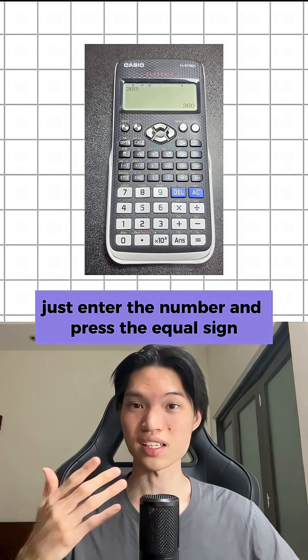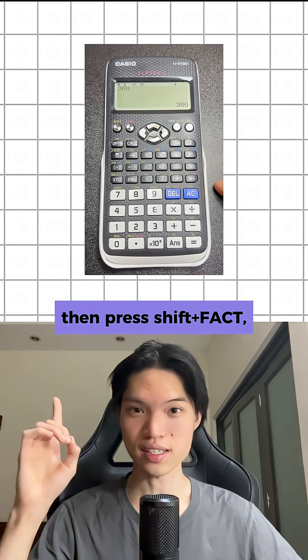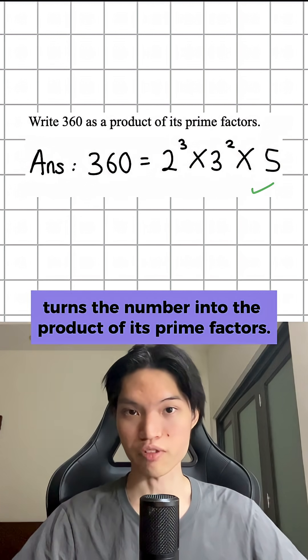Just enter the number and press the equal sign so that it shows up on the display, then press shift plus FACT located right there. That straight away turns the number into the product of its prime factors.